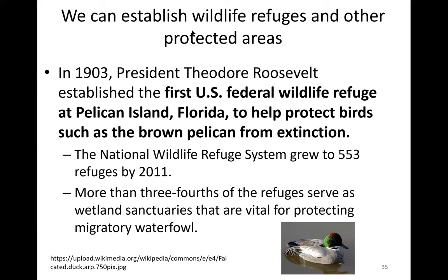We can also establish wildlife refuges and other protected areas. In 1903, President Teddy Roosevelt established the first U.S. federal wildlife refuge at Pelican Island in Florida, to help protect birds such as the brown pelican from extinction. The National Wildlife Refuge System grew to 553 refuges by 2011, with more than three-fourths serving as wetland sanctuaries vital for protecting migratory waterfowl.